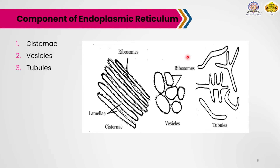In the rough endoplasmic reticulum, cisternae usually exist and occur in cells that have a protein synthesis role, such as cells of the pancreas, notochord, and brain. The second component is vesicles, which are rounded and oval in shape with a diameter of 25 to 500 nanometers. They are often isolated in the cytoplasm and are especially abundant in the smooth endoplasmic reticulum.